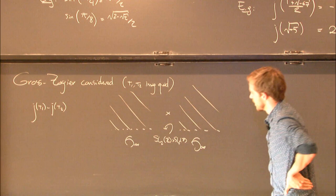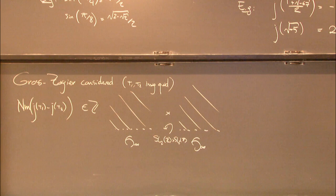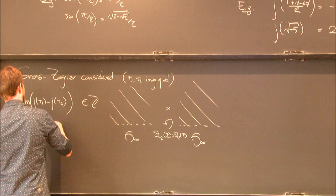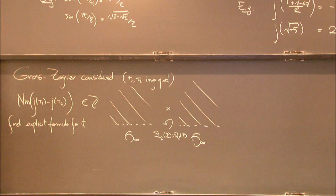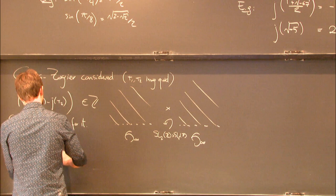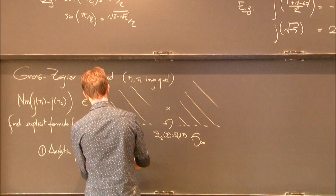To be perfectly precise, they really consider the norm of these numbers, which is now an integer—some explicit integer that they cook up. That's what this subject called CM theory tells us. Now what they do is they find an explicit formula for it. And what's so groundbreaking about their paper is not so much this explicit formula, but the way in which they prove it. In fact, they give two proofs.